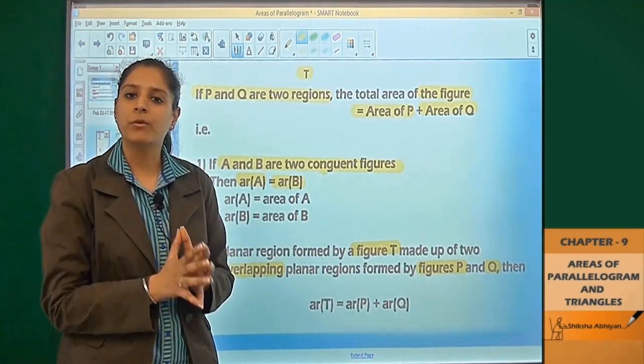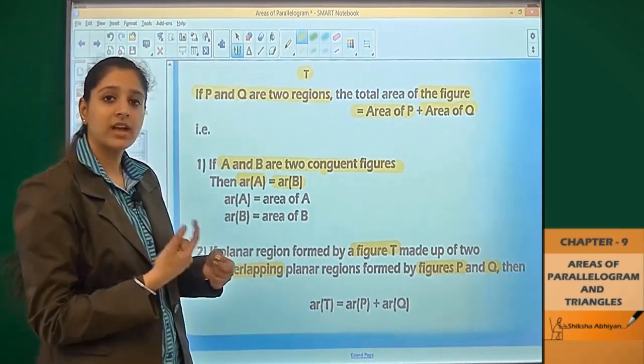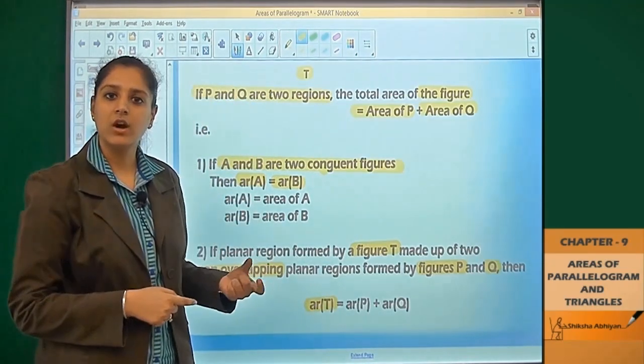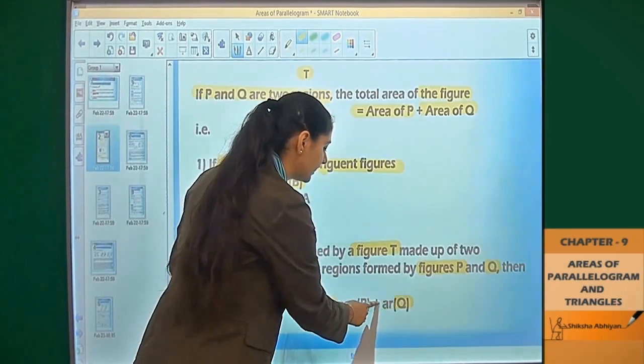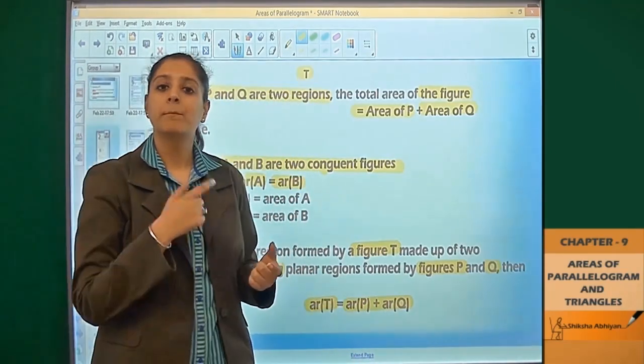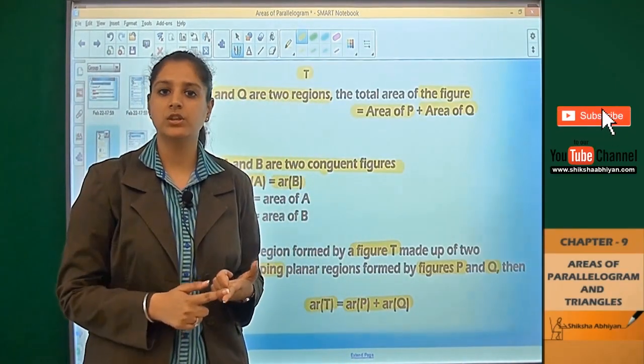We can say that the area of total figure T is equal to the area of region P plus the area of region Q.